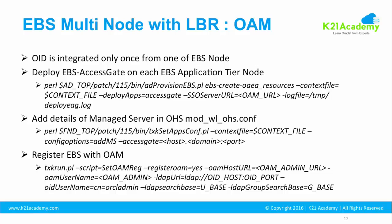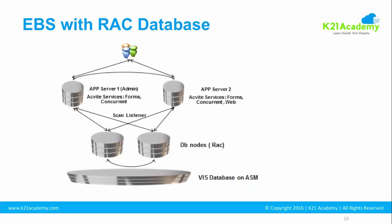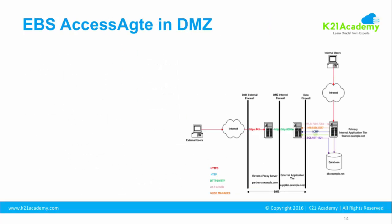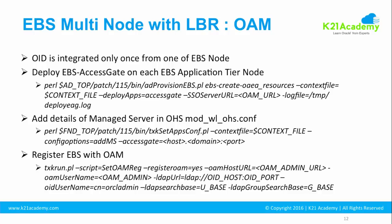This is how you configure multi-node e-business suite with Oracle Access Manager and Internet Directory. To summarize: OID integration steps are done once, and Oracle Access Manager related steps are done on each additional application tier.